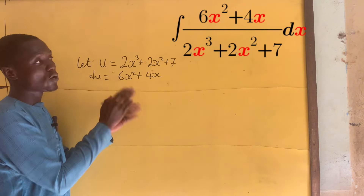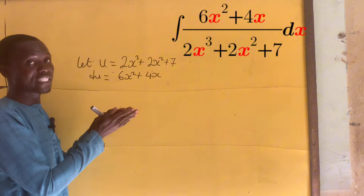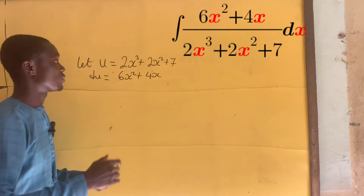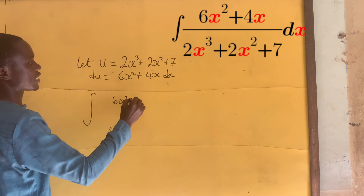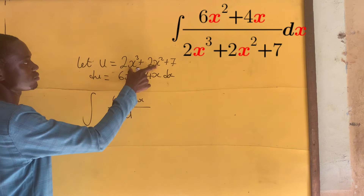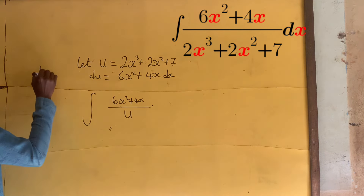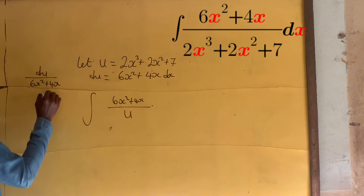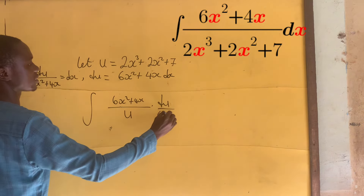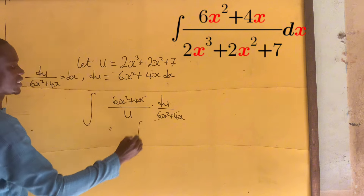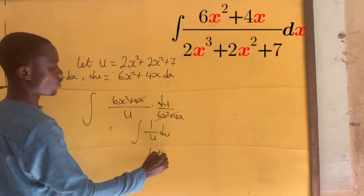Before you do partial fraction decomposition, always check first if the derivative of either the numerator or the denominator gives you the other one. Differentiate the denominator to check if you get the numerator — it will help you do a u-substitution in a very simple way. So now our integral becomes 6x squared plus 4x divided by u, times dx which is du divided by 6x squared plus 4x. This cancels, leaving us the integral of 1 divided by u.